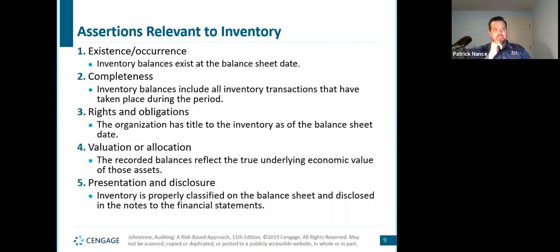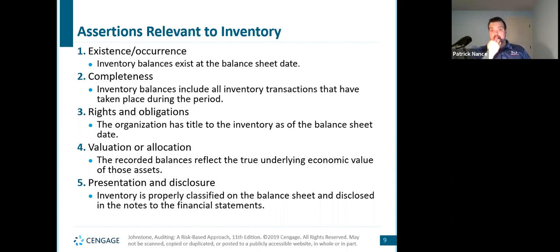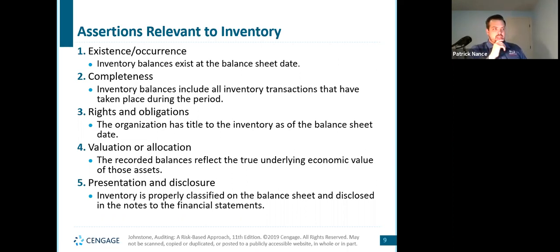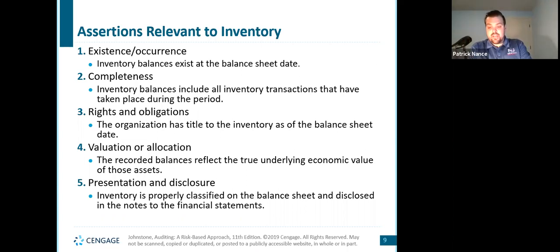Rights and obligations: the company has title to the inventory as of the balance sheet date. For example, if we sell things on consignment, we don't actually have any legal rights to it — one way to commit fraud would be a company claiming they have inventory they don't actually have ownership rights to because they're selling it for someone else. That means it should not be on their balance sheet even if it is on site at their location. Valuation or allocation: the recorded balances reflect the true underlying economic value of the assets. Presentation disclosure: the inventory is classified properly on the balance sheet and disclosed in the notes of the financial statements as it should be. This is on page 573.